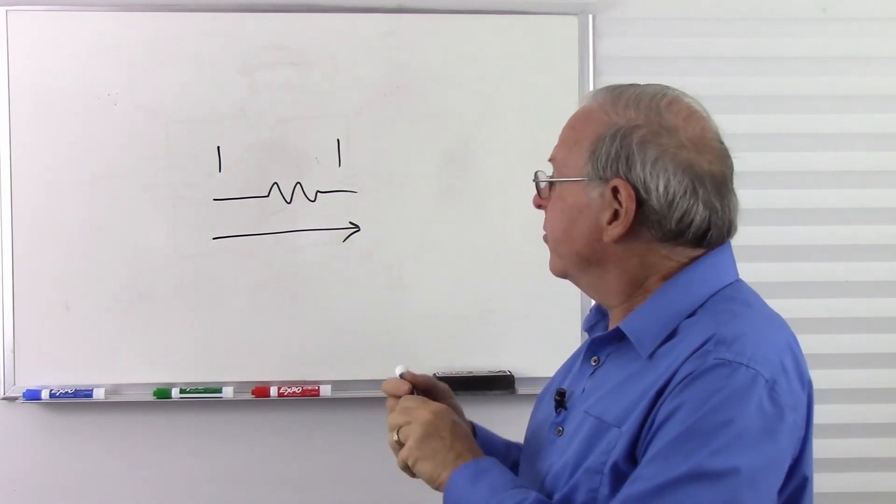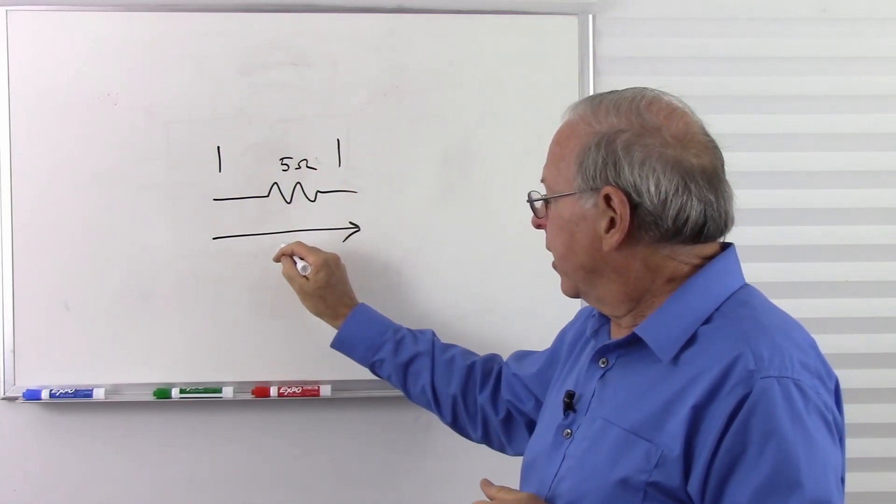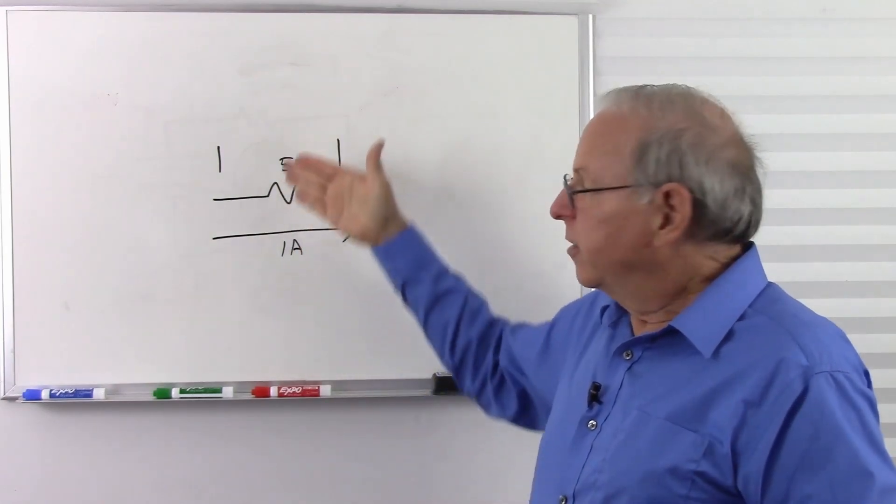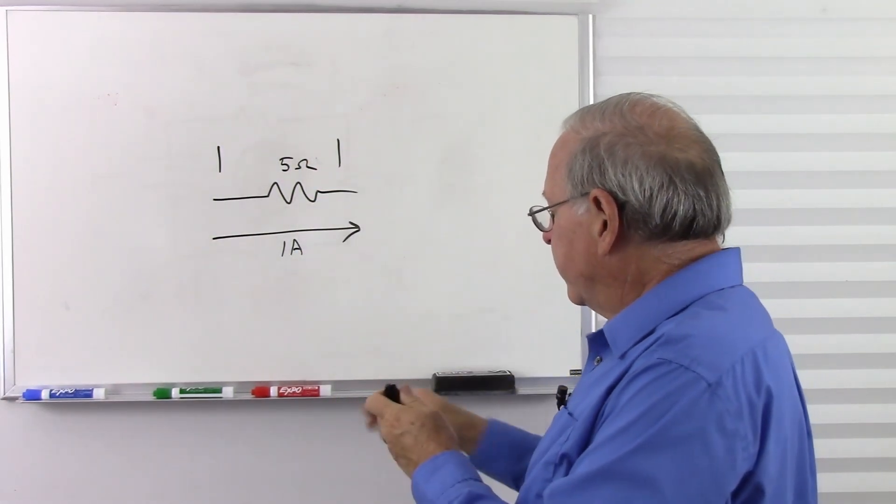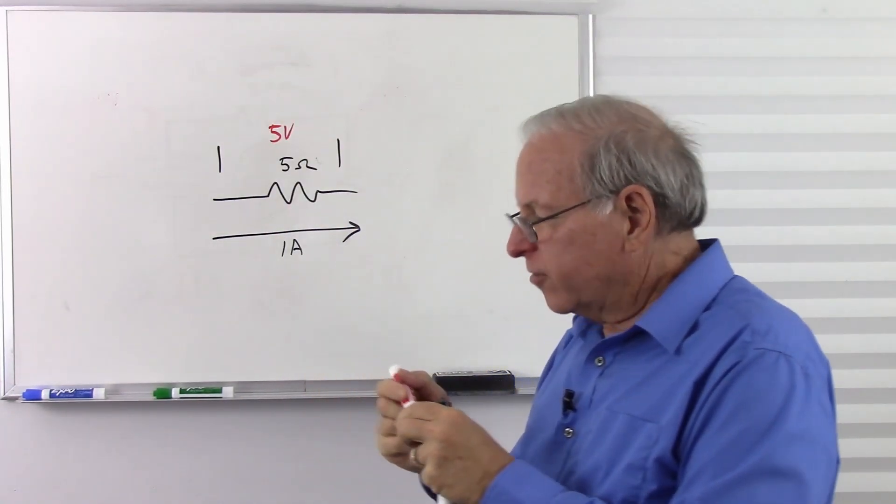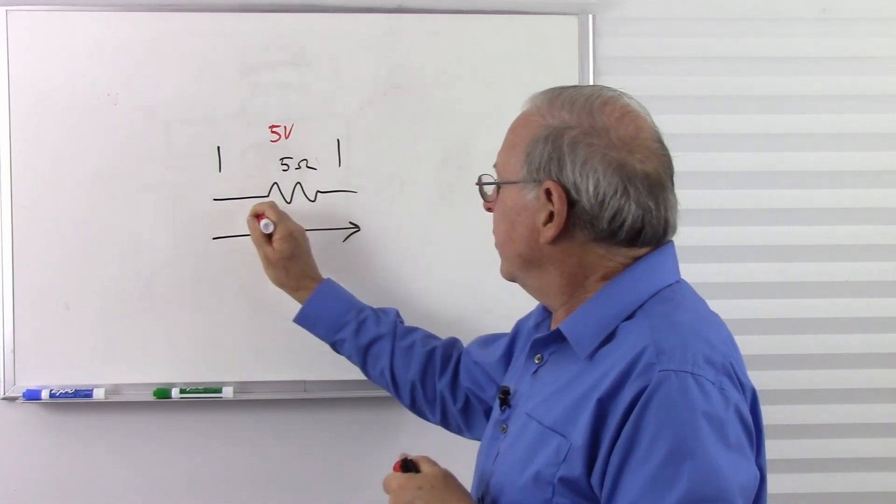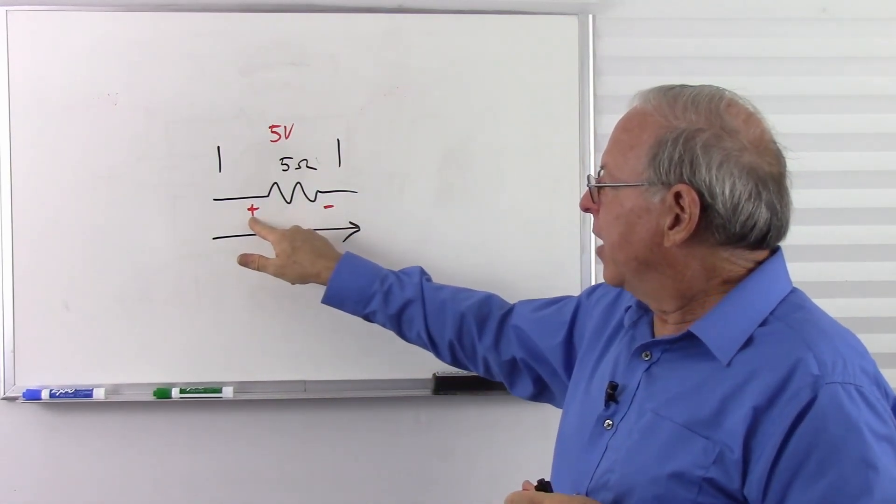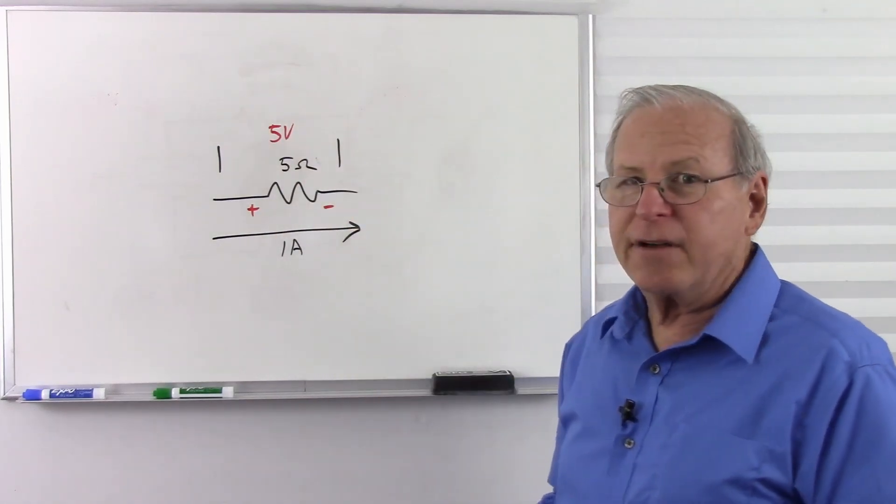And so if we have a certain amount of current flowing through this resistor, we're going to have a higher voltage where the current enters and the lower voltage where it exits. And if we know what that resistor is, and we know what this current is, let's say it's 1 amp and 5 ohms. Ohm's law says 1 times 5 gives us a total of 5 volts across that resistor. And it's going to be higher where the conventional current goes in, lower where it goes out.